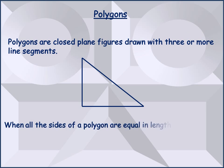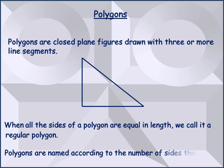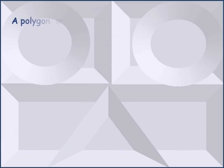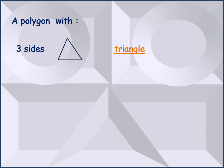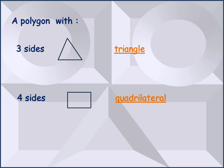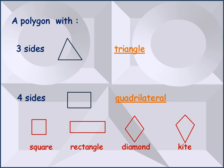When all the sides of a polygon are equal in length, we call it a regular polygon. Polygons are named according to the number of sides they have. A polygon with three sides is called a triangle and a polygon with four sides is called a quadrilateral. You might be wondering why we call it a quadrilateral and not a square or rectangle. The answer is we cannot give different names to a polygon with four sides as it would create confusion. The common name is quadrilateral. Square, rectangle, diamond, kite, and other closed plane figures which have four sides are all different types of quadrilaterals.